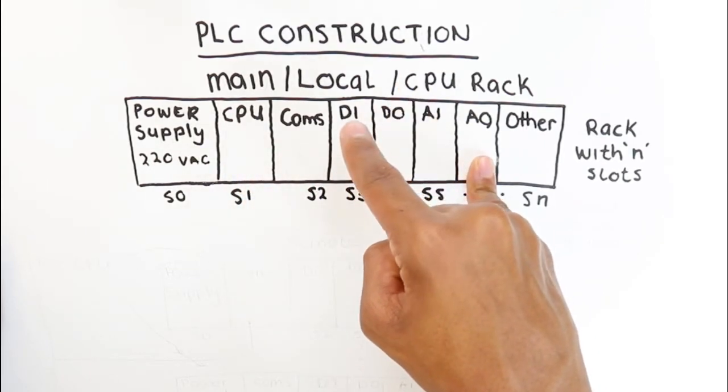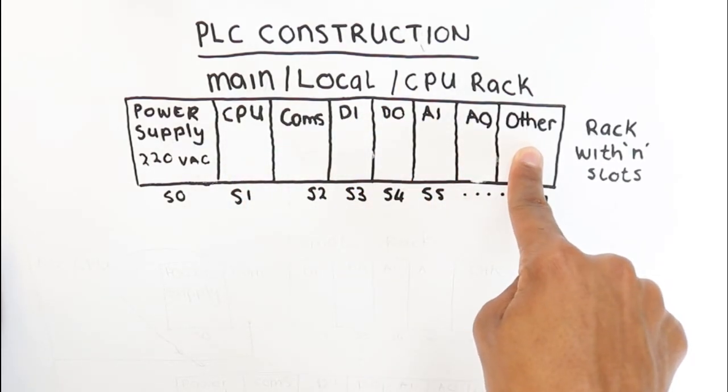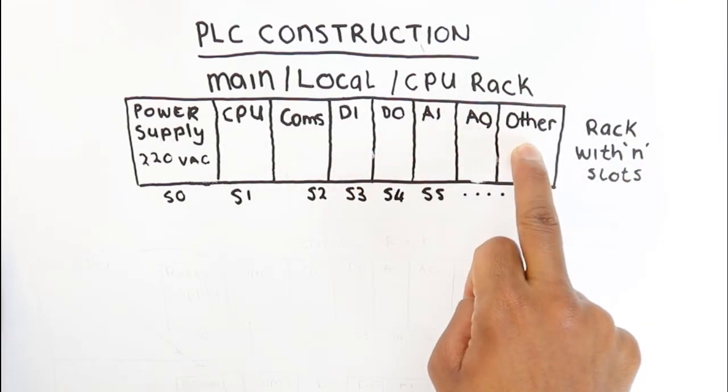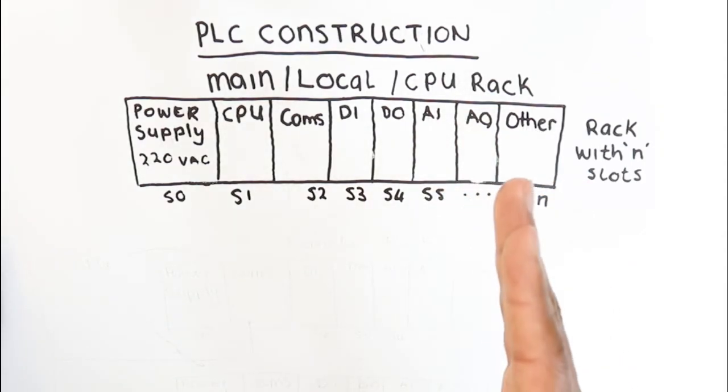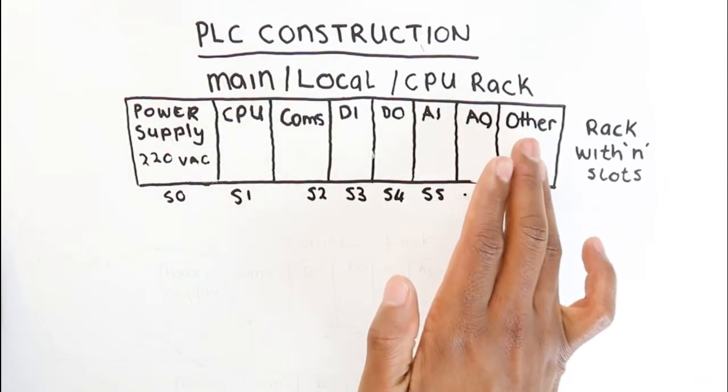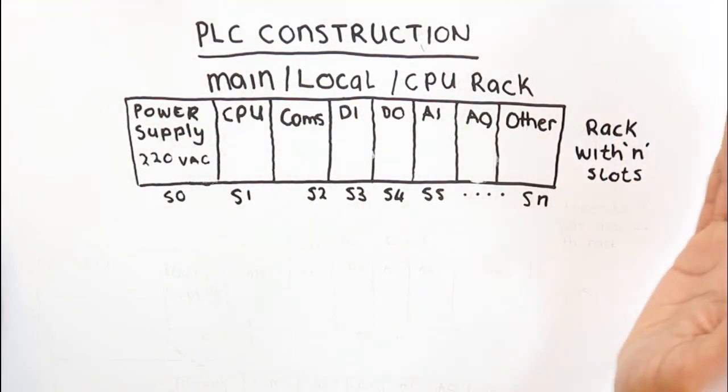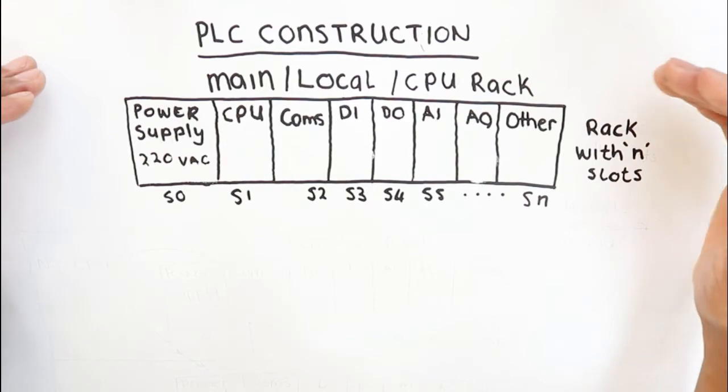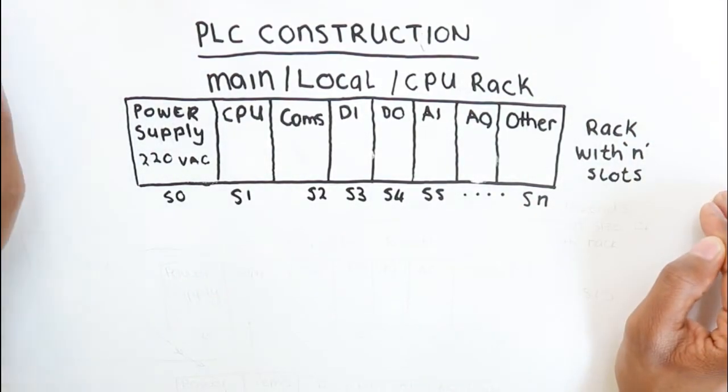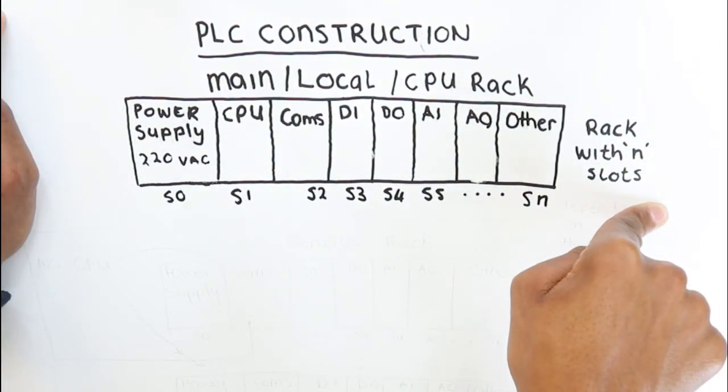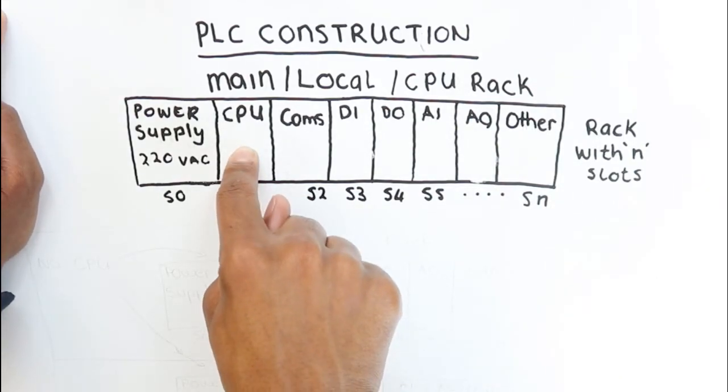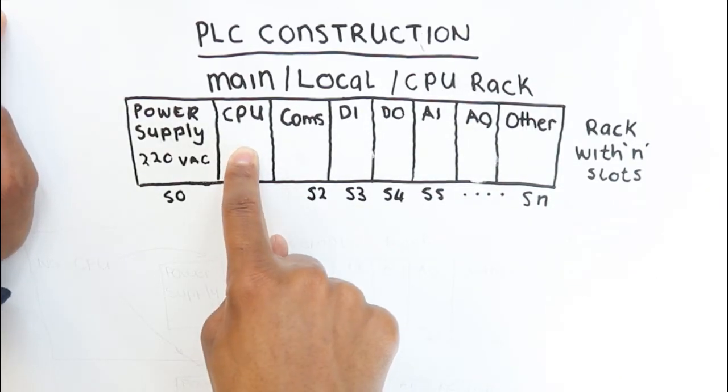Then afterwards you can have other cards. This could be like non-conventional cards that you'd have on your PLC if there are particular devices that you want to control or interface with your PLC. But usually this is how you'd find a PLC rack, and this is how you'd find your main rack if you're working in a factory. The one way that you always identify your main rack is the CPU.